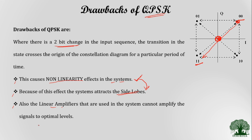The linear amplifiers used in the system cannot amplify signals to optimum levels, so optimal amplification does not occur. These are the major drawbacks of Quadrature Phase Shift Keying. These drawbacks are eliminated in another form called OQPSK — Offset QPSK. The concepts and detailed transmitter and receiver diagrams of OQPSK will be discussed in the next video. Until then, happy learning.